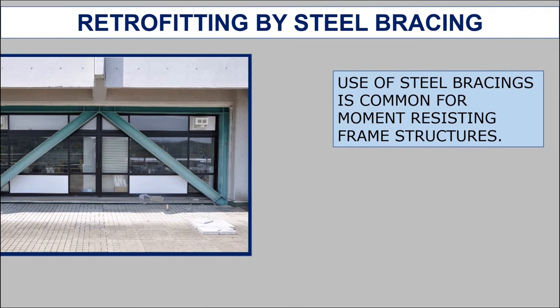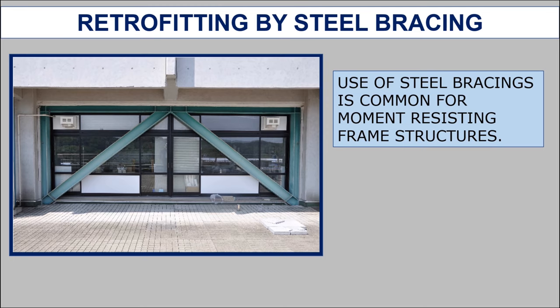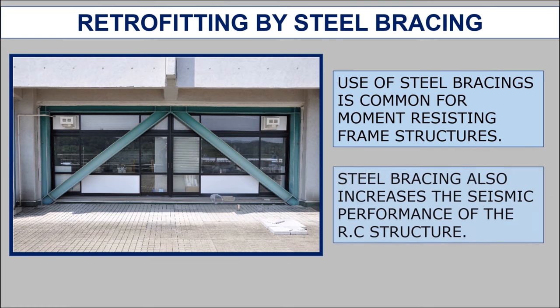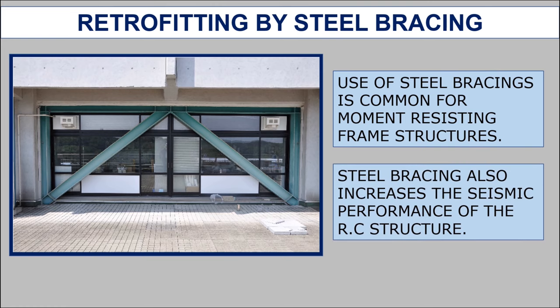Retrofitting by steel bracing is common for moment resisting frame structures. Proper connection of the bracing with the existing wall ensures adequate strength, stiffness, and ductility for the structure. Steel bracing also increases the seismic performance of the RC structure. Providing steel bracing at proper intervals decreases the buckling length, which in turn increases the capacity of the bracing member.